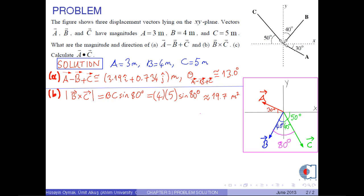By the right hand rule, B cross C is on the positive k hat direction. As a result, B cross C is approximately 19.7 k hat meters squared.